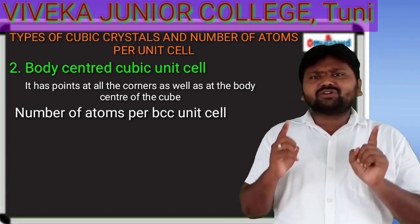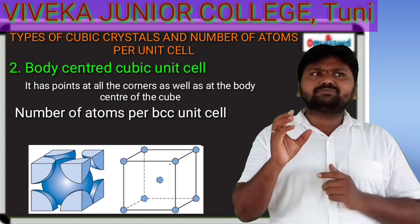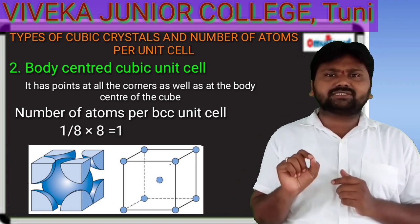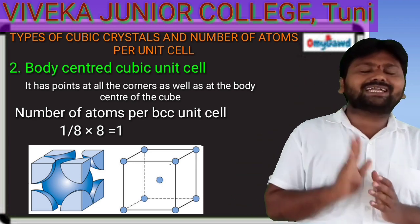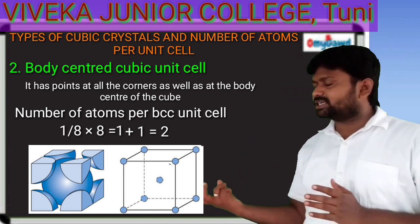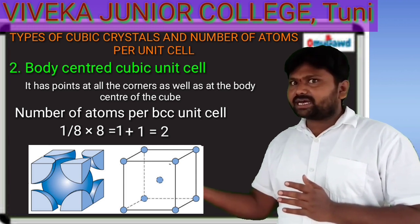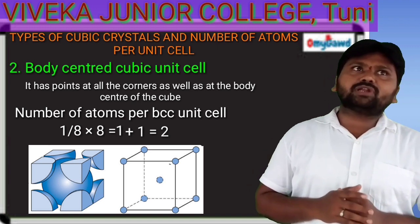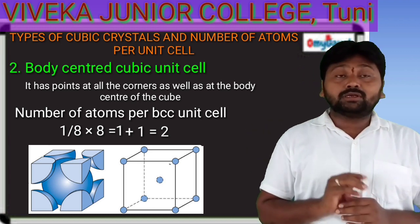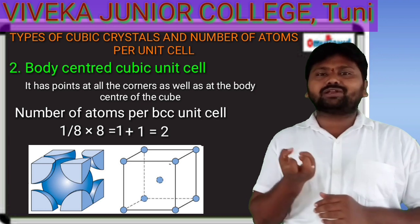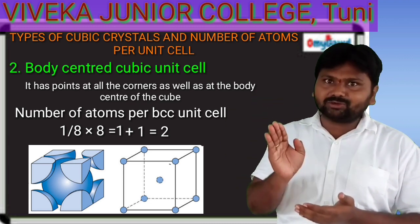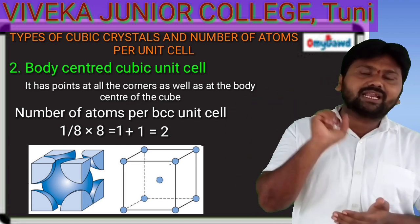For the BCC unit cell: 8 corner atoms each contribute 1/8, so 8 × (1/8) = 1. Plus the body-centred atom, which is a complete atom contributing 1. Therefore 1 + 1 = 2 atoms. The number of atoms per body-centred cubic unit cell is 2.